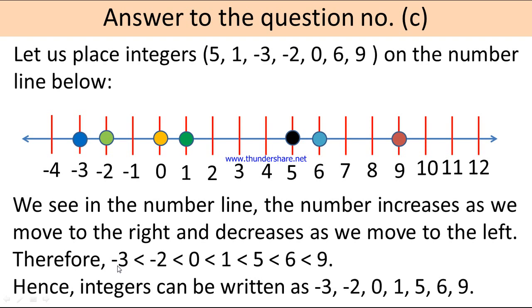From the number line we can see: minus 3 is smaller than minus 2, minus 2 is smaller than 0, 0 is smaller than 1, 1 is smaller than 5, 5 is smaller than 6, and 6 is smaller than 9. Therefore, the integers arranged in ascending order are: minus 3, minus 2, 0, 1, 5, 6, 9.